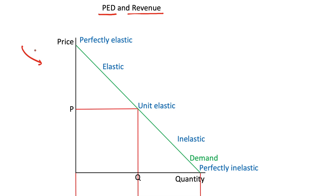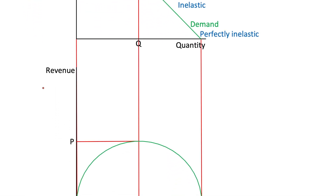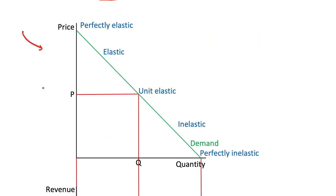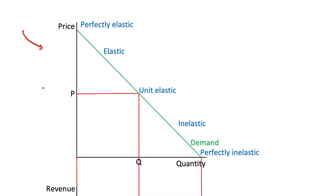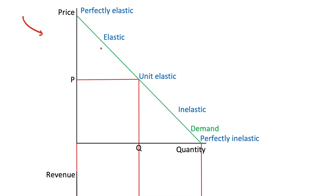What this means is that by choosing a price at different points along the demand curve, a business can change how much revenue they can get. We can actually plot this relationship on a slightly unconventional graph where we have two diagrams connected to each other. But to begin with, let's look at this demand curve and have a quick discussion about the different elasticities along it.